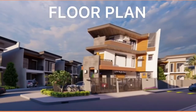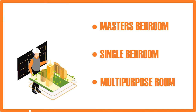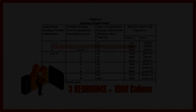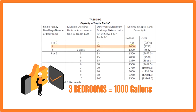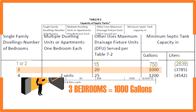We must keep in mind that based on the floor plan of the Mando's residence, the structure has three bedrooms overall: a master's bedroom, a single bedroom, and a multi-purpose room. To figure out the volume of the Septic Tank, we must first go back to Table B2 of the Revised National Plumbing Code of the Philippines. According to Table B2, single-family dwellings with three bedrooms have a minimum septic tank capacity of 1,000 gallons or 3,785 liters.